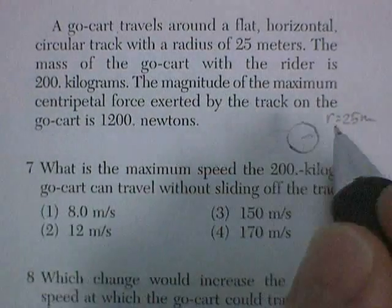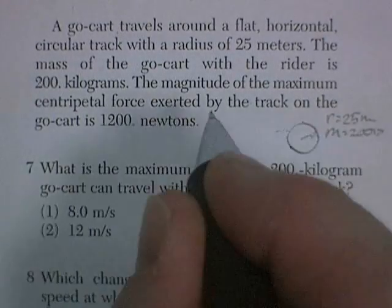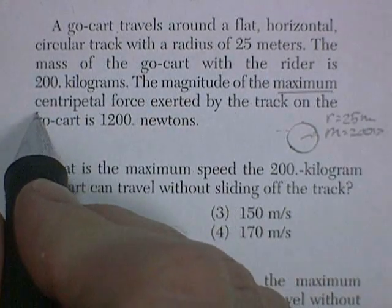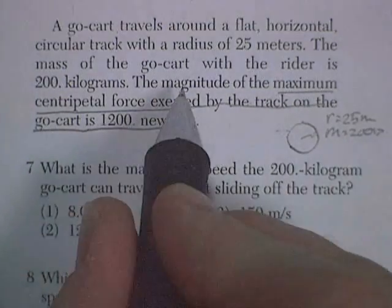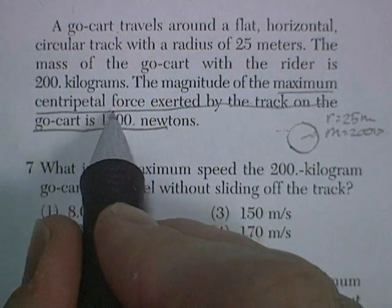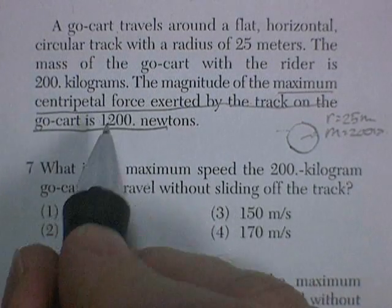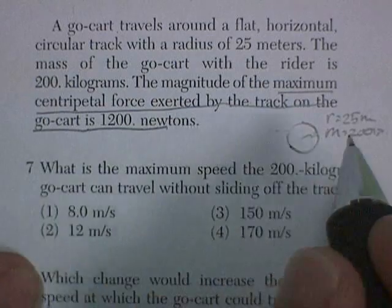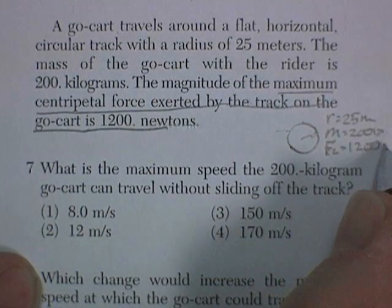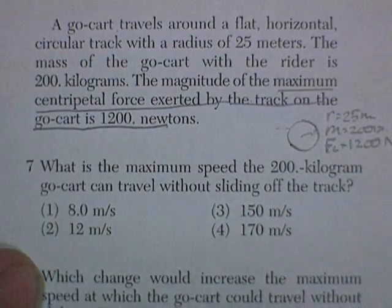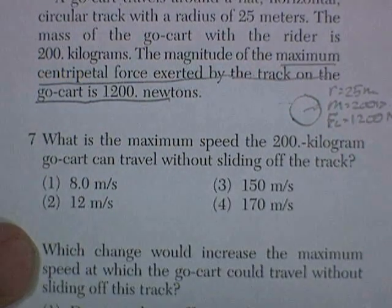Ours 25 meters. The mass of the go-kart with the rider is 200 kilograms. The magnitude of the maximum centripetal force exerted by the track on the go-kart. So this is the greatest amount of friction that you can get out of this system. And so the maximum amount of centripetal force you could exert without sliding off the track. Force centripetal is 1, 2, 0, 0, newtons. What's the maximum velocity that you could travel without sliding off the track?